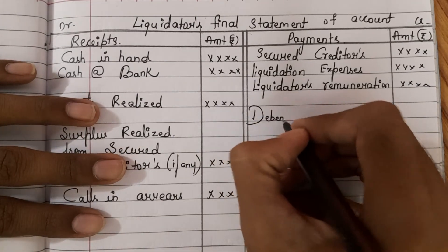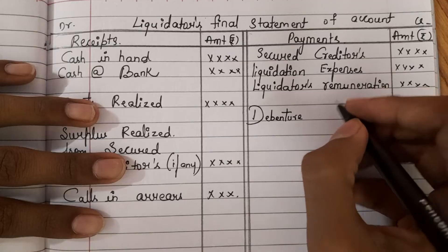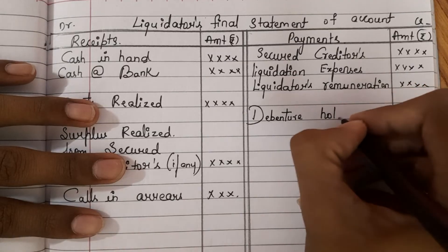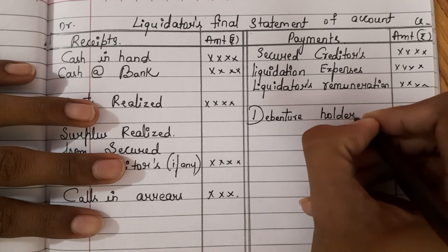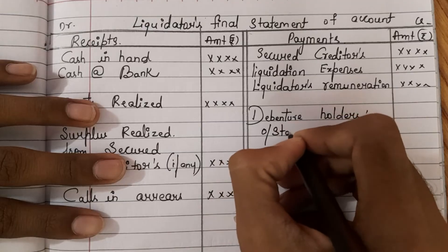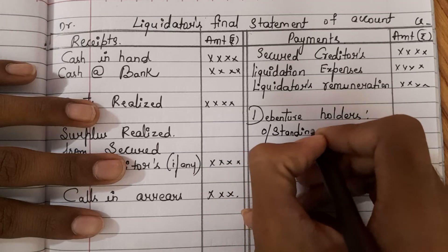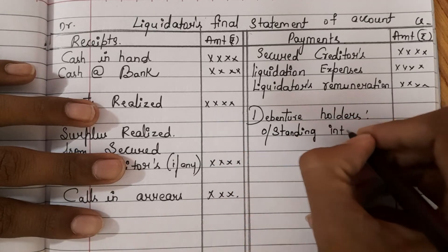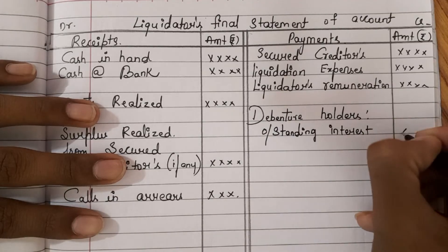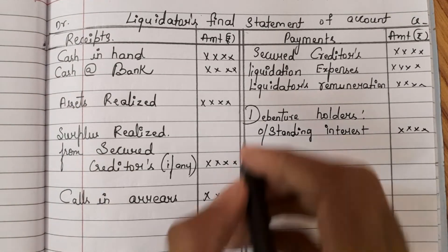After all these things, next we need to come to the debenture holders. If any outstanding amount or outstanding interest is there on debentures, first that has to be cleared off.